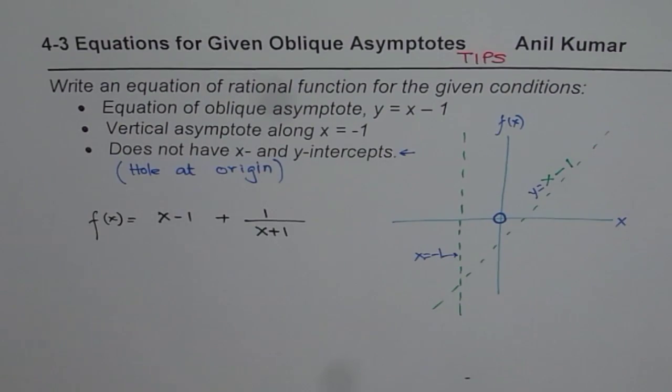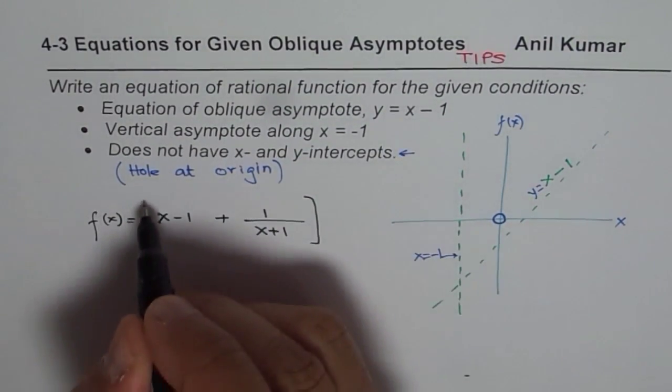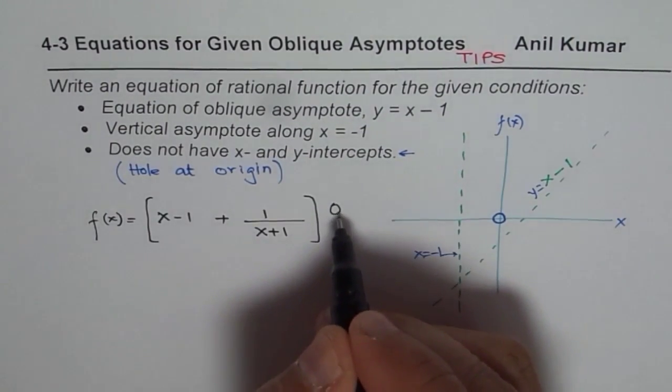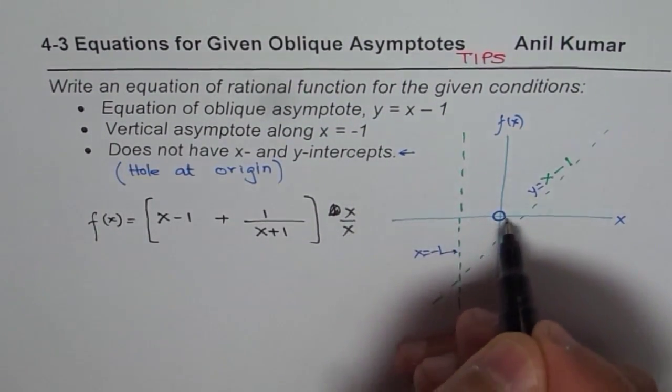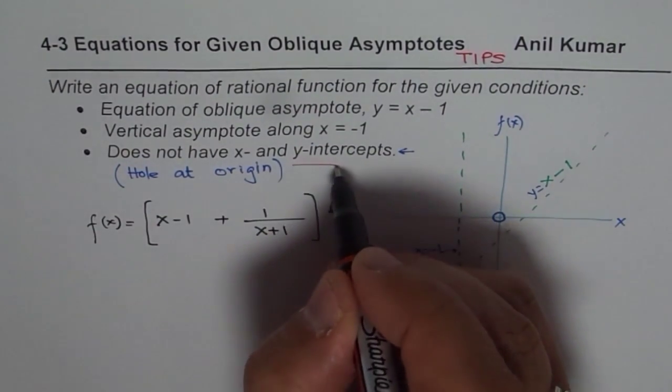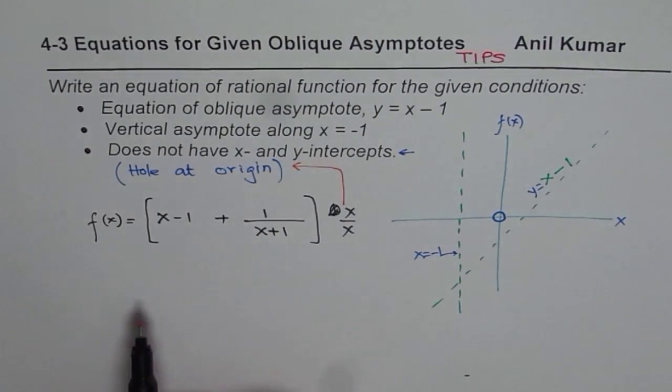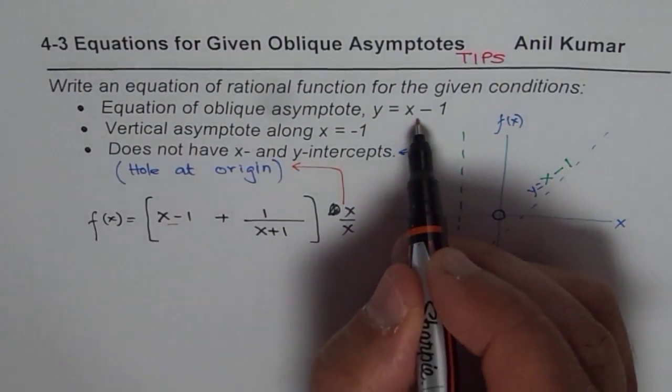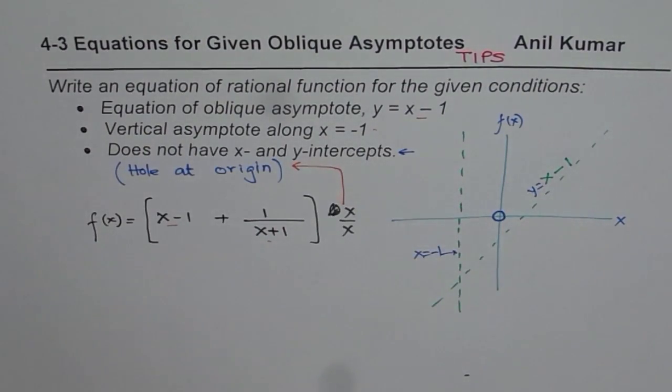Now once I say that it has a hole at origin, that means the function will have a common factor which is x over x. Now that cancels out giving us hole at the origin. So this is the function which we are talking about. You get the idea? So this condition x over x will give you the hole at the origin. And that is your oblique asymptote and this is your vertical asymptote.